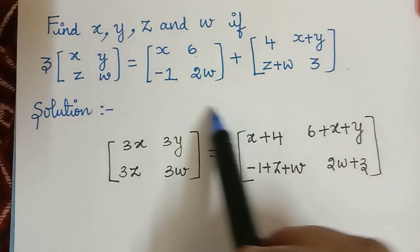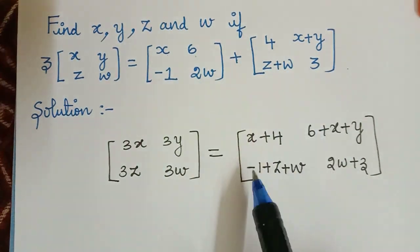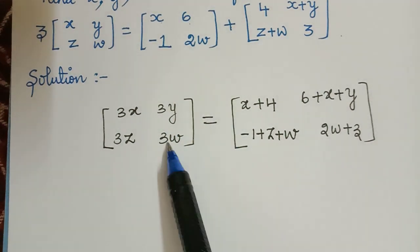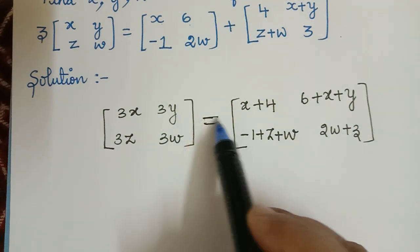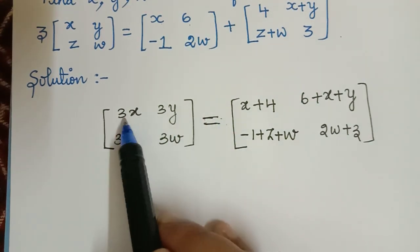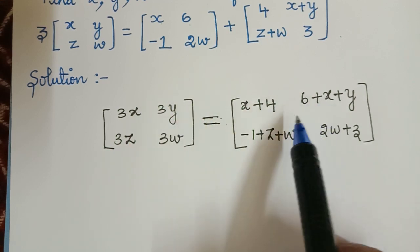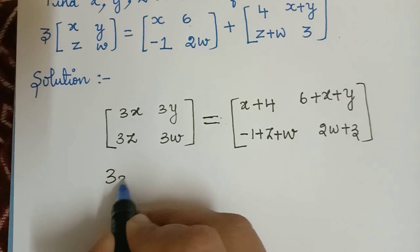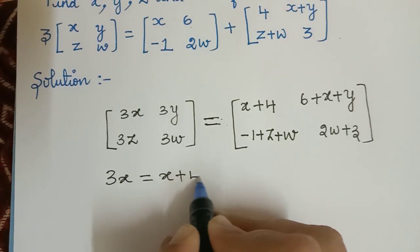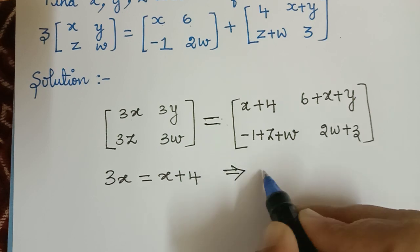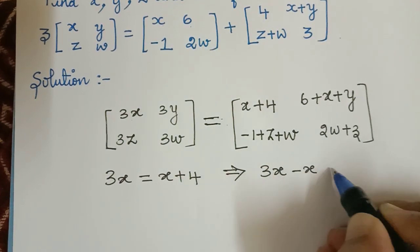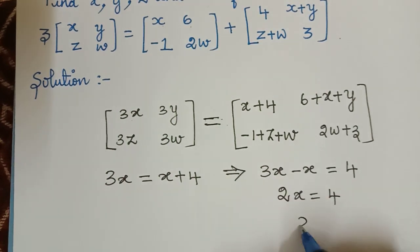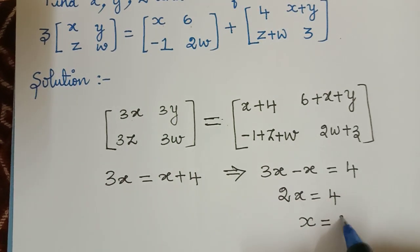So after adding the corresponding elements, we have to compare these two matrices because they are equal. When two matrices are equal, the corresponding elements will also be equal. So 3x will be equal to x plus 4. From this equation we obtain 3x minus x equals 4, so 2x equals 4, and therefore the value of x is equal to 2.